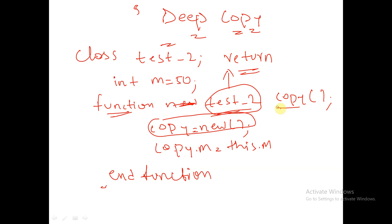Instead of defining any variable separately, we can use the function name itself as a variable — this we have discussed in previous sessions. So copy is a handle, we are creating the object with copy = new, and in this object we are copying the value of m.